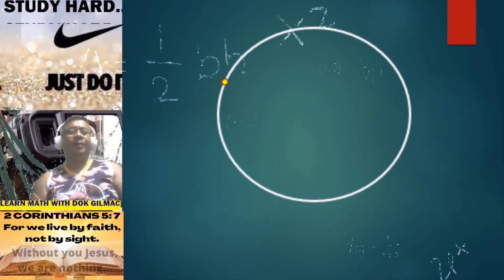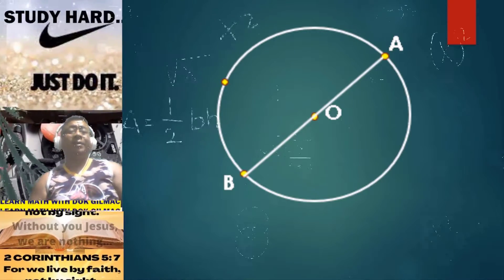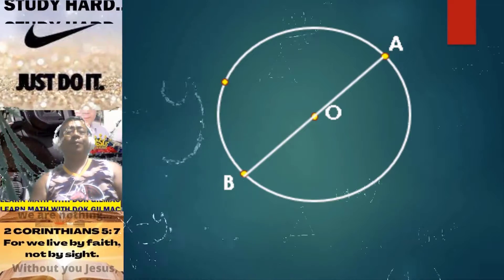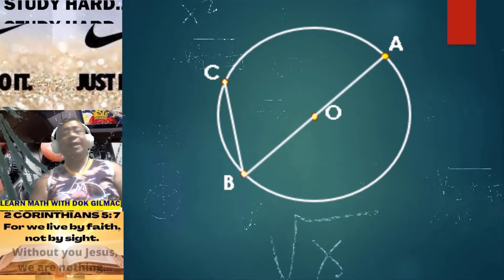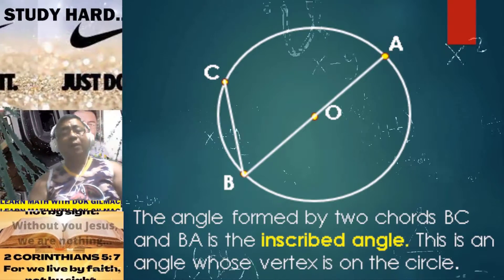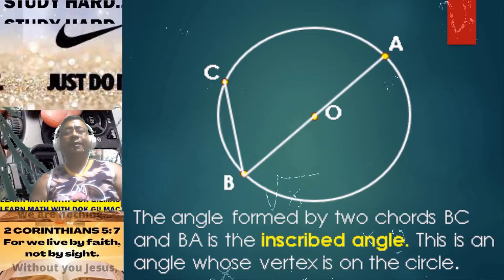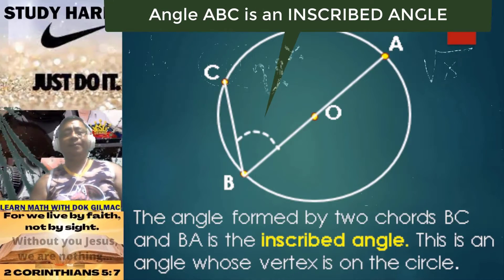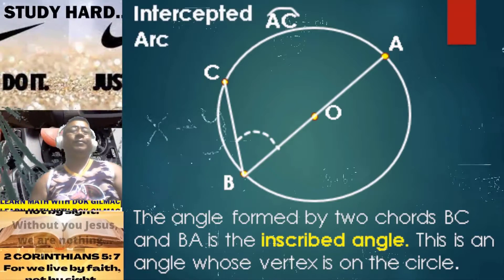Consider again circle O. We have segment joining point A and B, which is the diameter since this segment includes the center of the circle. Joining point B and point C is another chord. The angle formed by two chords, segment BC and segment BA, is what we call the inscribed angle. This is an angle whose vertex is on the circle. We have angle ABC as our inscribed angle. The intercepted arc is simply arc AC.